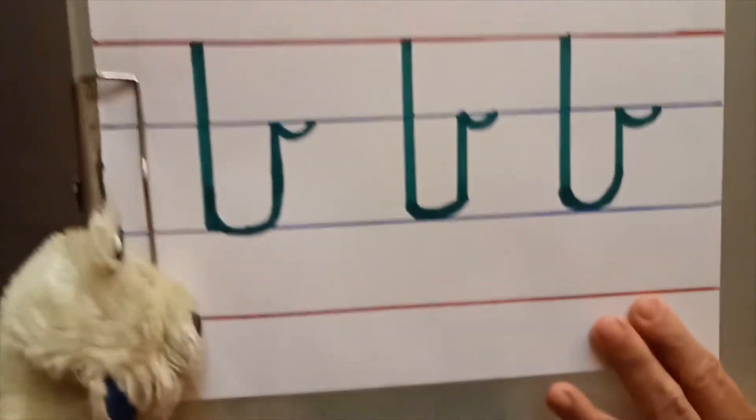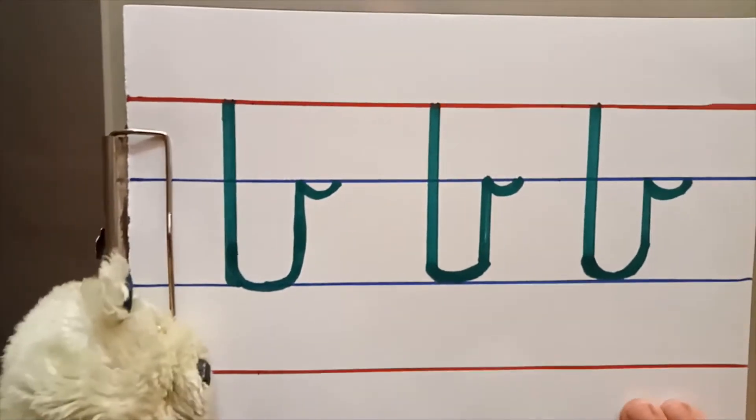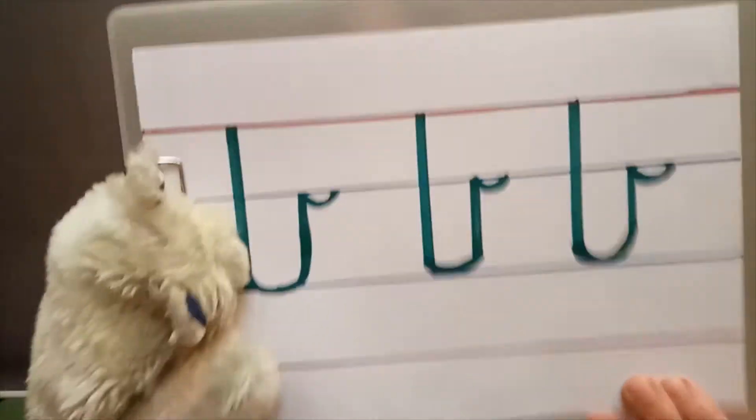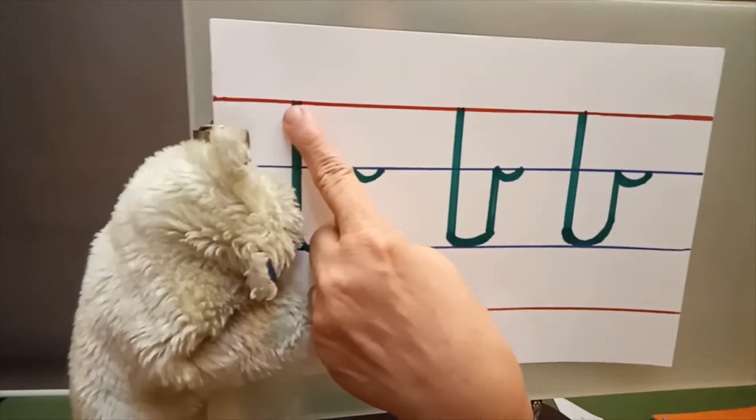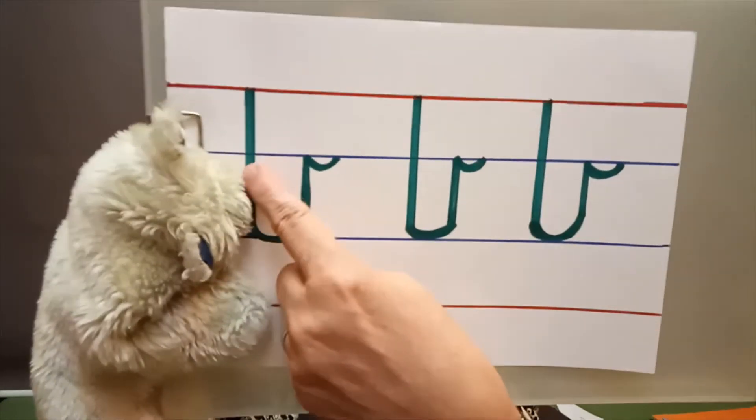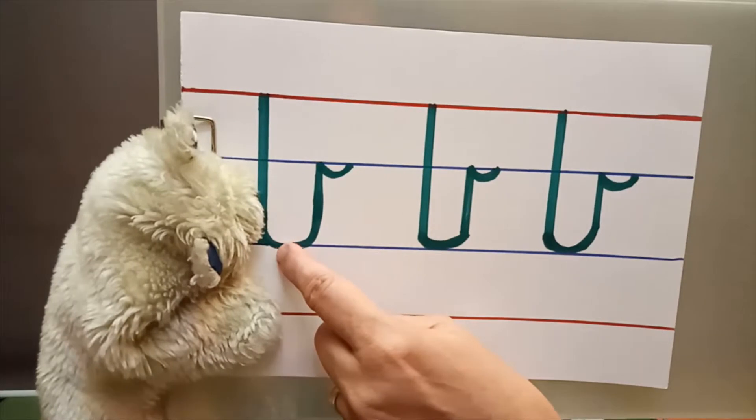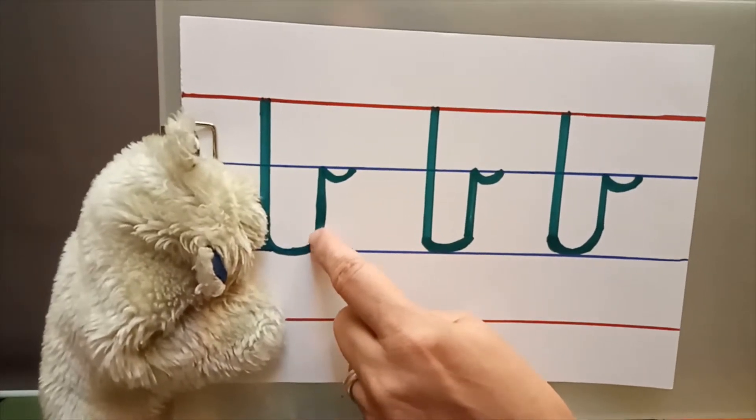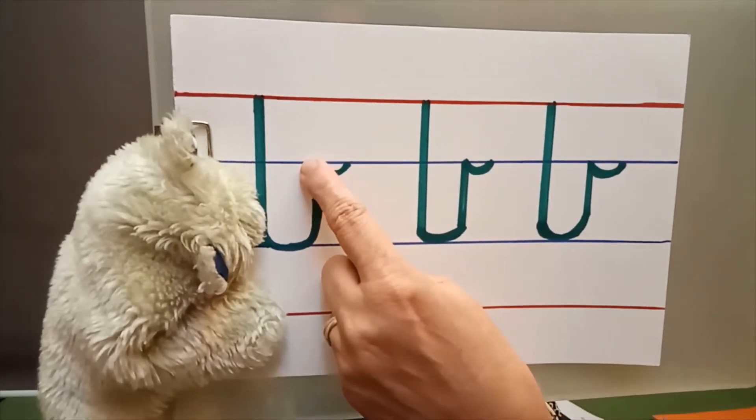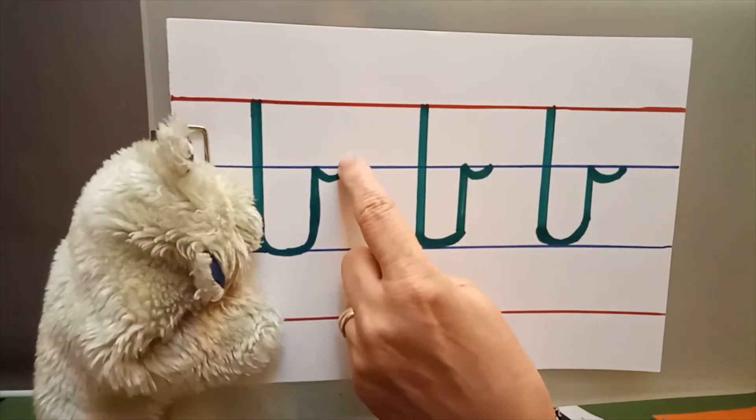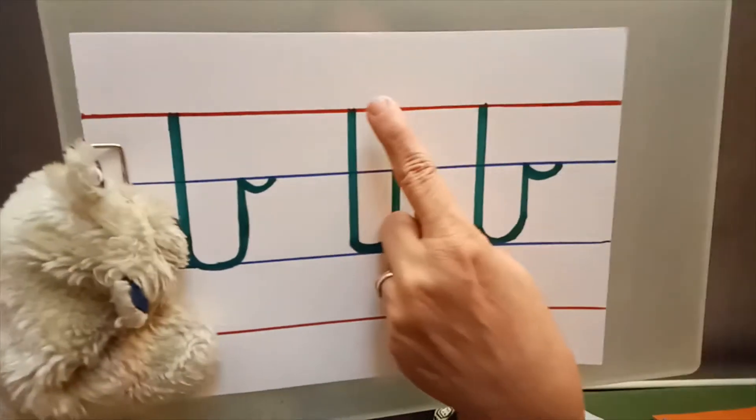Okay, now here see b, this is how we write b. Now what do we do? Again we start from the red line, we make a standing line, then how we write small l, that way we make a turn but we have to go to the blue line and then one small jump.